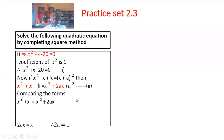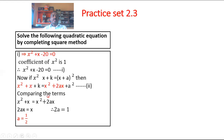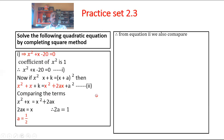The x squared terms cancel. Hence, 2a equals 1, so the value of a equals 1 upon 2. From equation 2, comparing the remaining part, k equals a squared. The value of a is 1 by 2, so 1 squared is 1 and 2 squared is 4, giving k equals 1 upon 4. The values of a and k are very important for completing the square method.